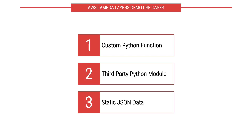In today's demo, we'll be exploring three use cases. First, we have a Lambda function which we want to use in multiple Lambda functions — we'll write it once inside a layer and use it in multiple functions. Second, we'll include third-party modules inside a layer and use them in multiple Lambda functions. Third, we'll add some static data in JSON format, which we'll use in multiple Lambda functions. I'll be using SAM CLI to author, test, and deploy my Lambda functions and layers. I'll leave the link to my SAM video in the description.